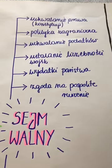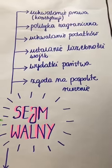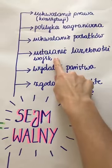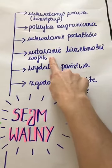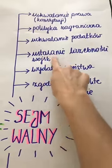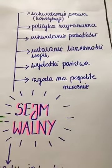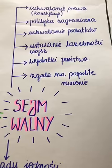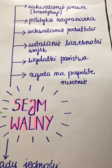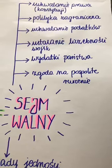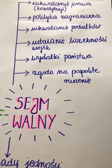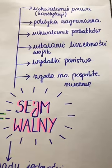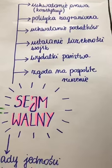Sejm dalej zajmuje się polityką zagraniczną, uchwala podatki, ustala liczebność wojsk. To jest bardzo ważne, bo moja klasa omawiała Powstanie Chmielnickiego – senatorowie, posłowie i król ustalali liczebność wojsk kozackich, rejestr kozacki. Sejm zajmuje się też wydatkami państwa i jego przychodami – ile król ma w skarbcu pieniędzy i na co może je wydać. Oraz zgoda szlachty na wyruszenie pospolitego ruszenia na wojnę.